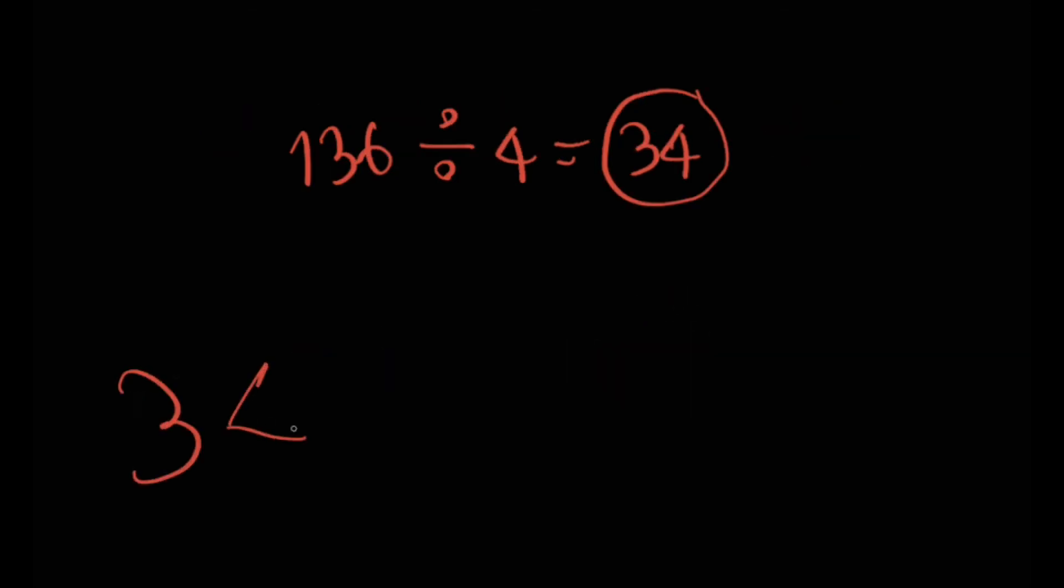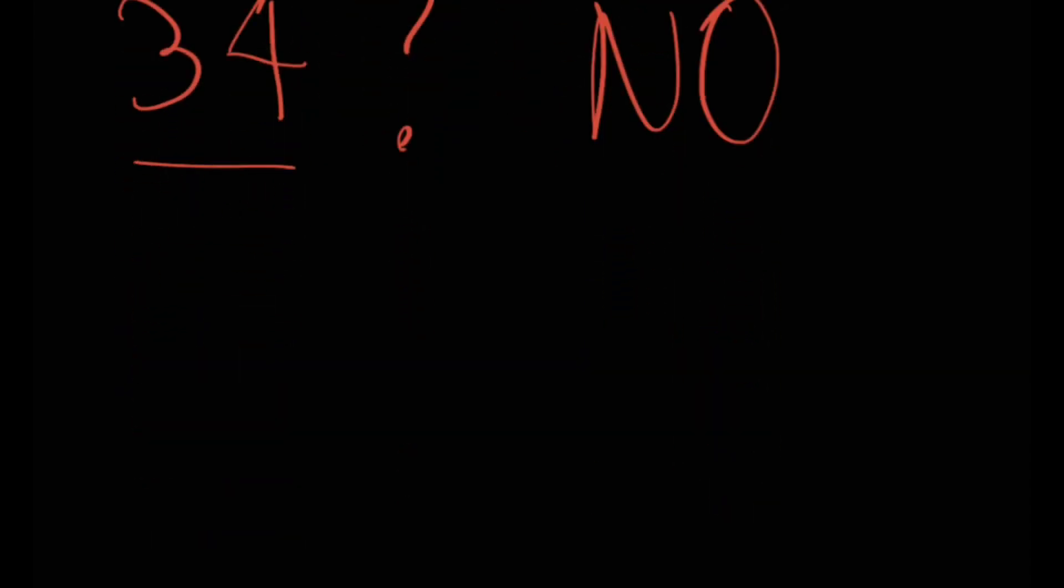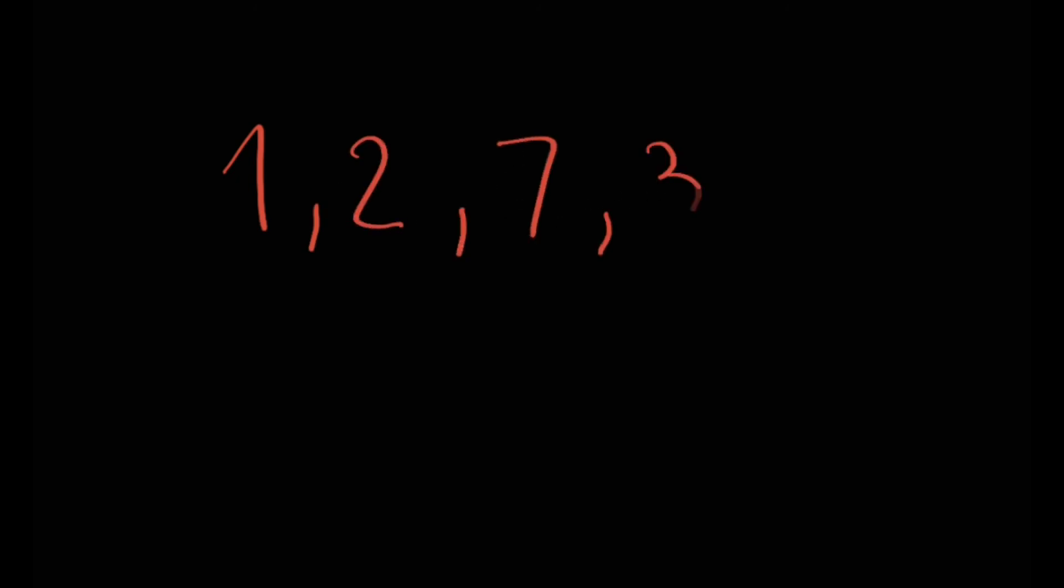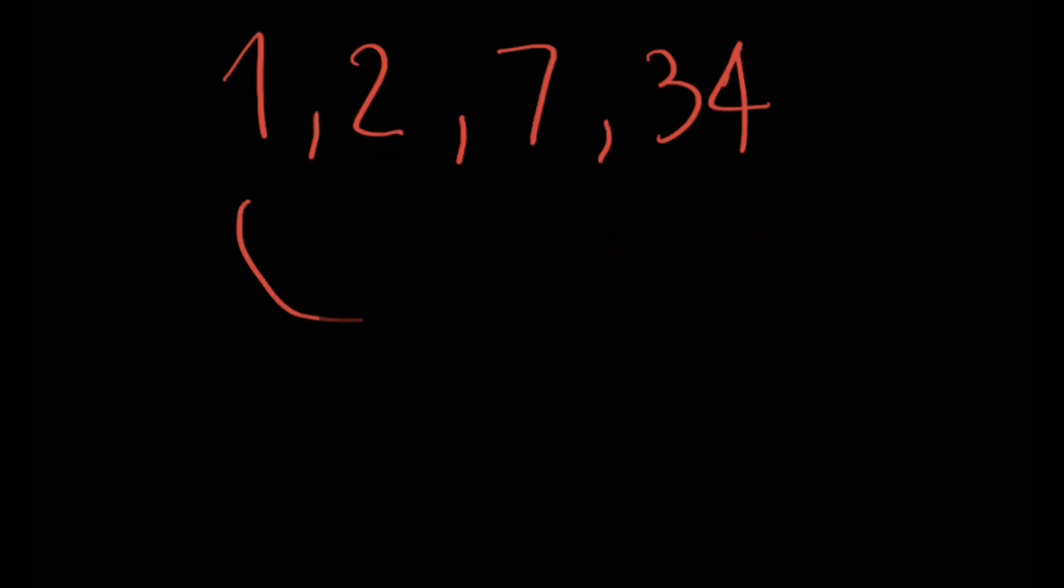Now, following our last train of thought, we would ask the following question. Is the number 34 a prime number? And it is not. Why? Because it can be divided by 4 different numbers. The numbers 1, 2, 7, and, of course, itself, 34.